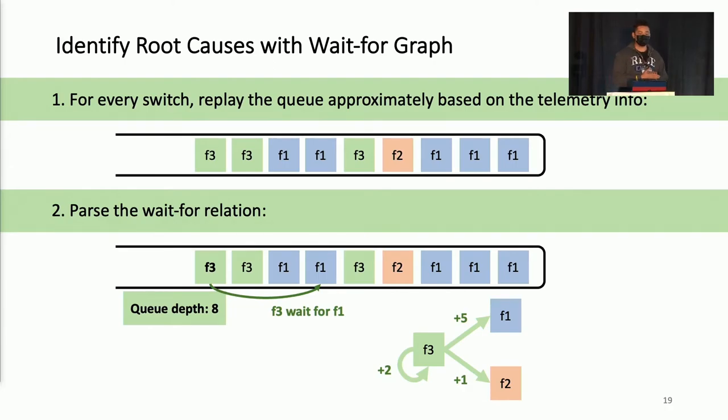After aligning the telemetry data, Spider-Man can identify the root causes with a wait-for graph. The first step to construct a wait-for graph is to replay the queue with information we collected. We use the traffic volume from the telemetry data to replay the queue. Then the second step, we parse the wait-for relation. For example, the last flow 3 packet will wait for the 8 packets right before it. We can see how we update the wait-for graph is that we have five F1 packets in front of F3, so it's added by 5.